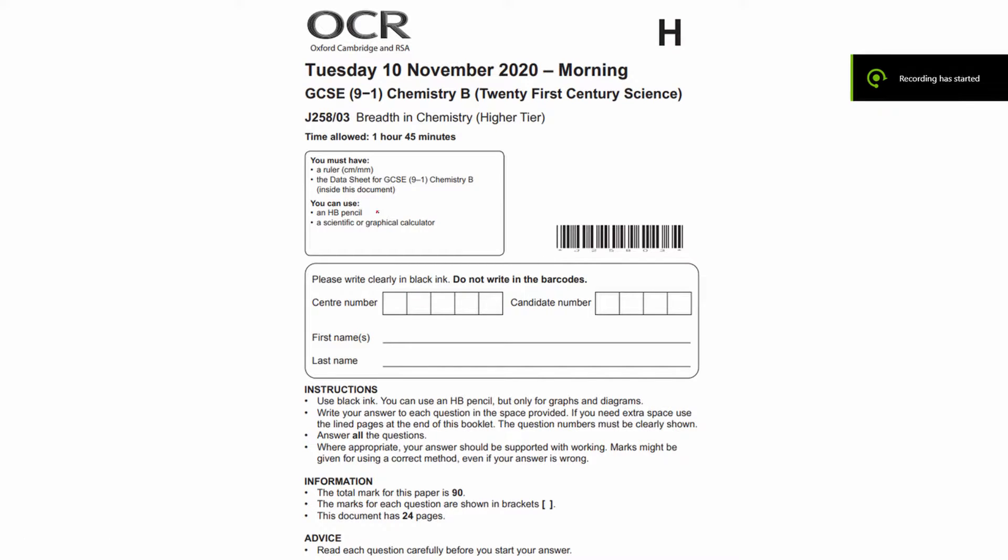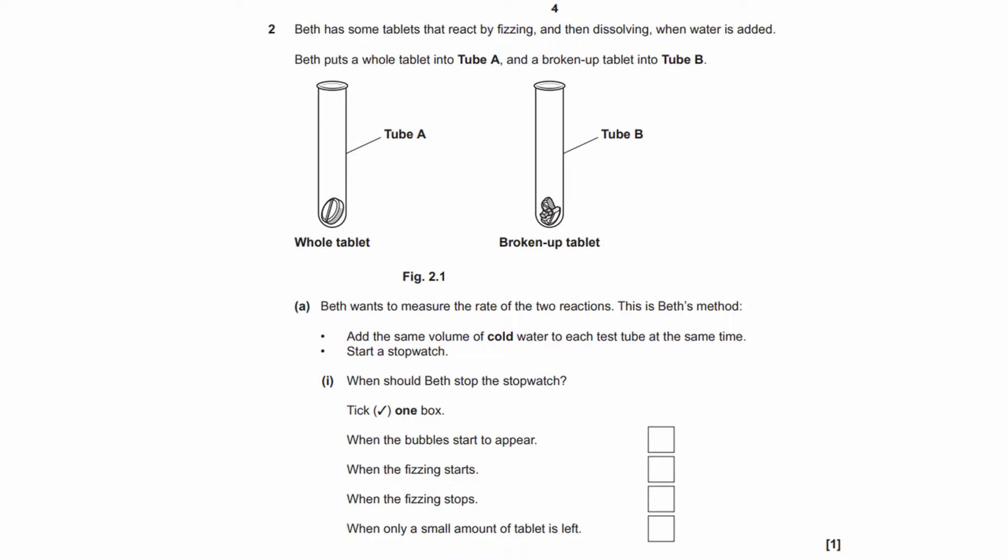So this is the OCR 21st century GCSE chemistry higher-tier paper, and these are the details of the paper in front. It's a November 2020 paper. Okay, so we're doing question 2.